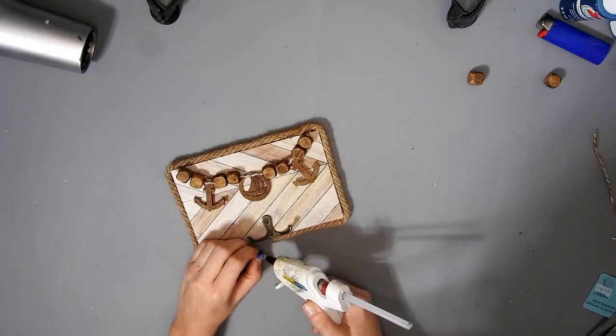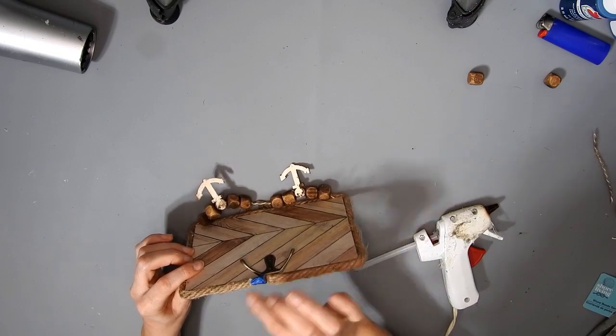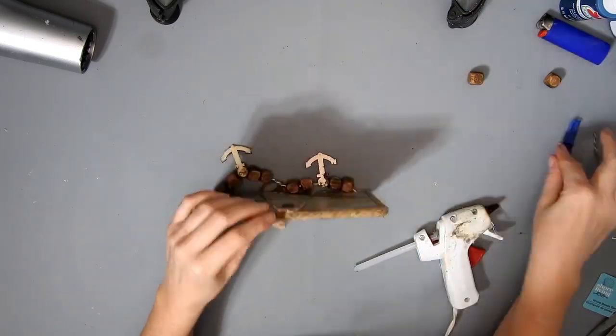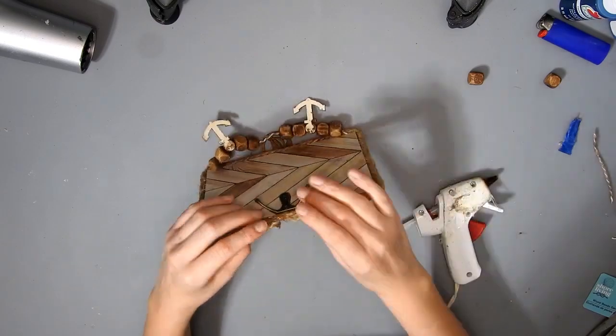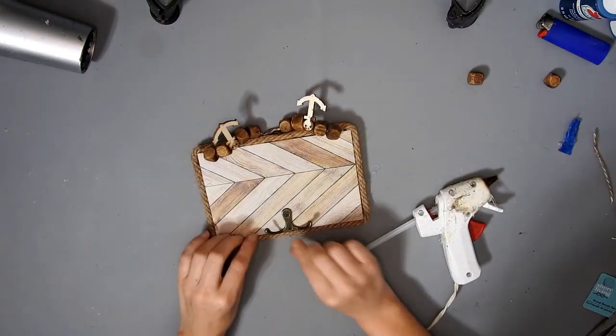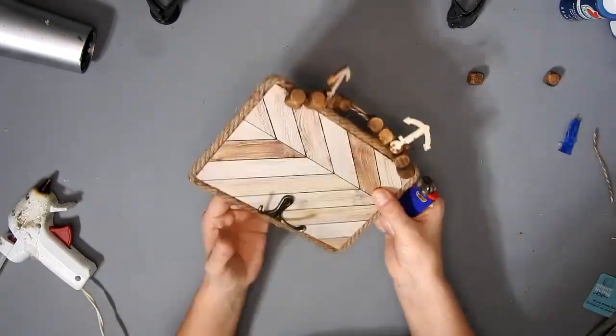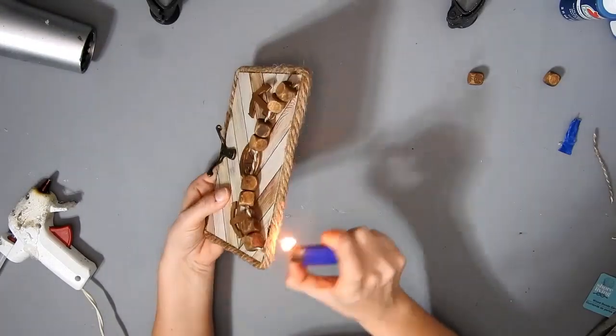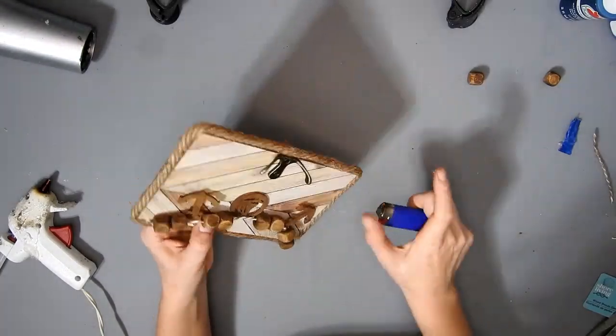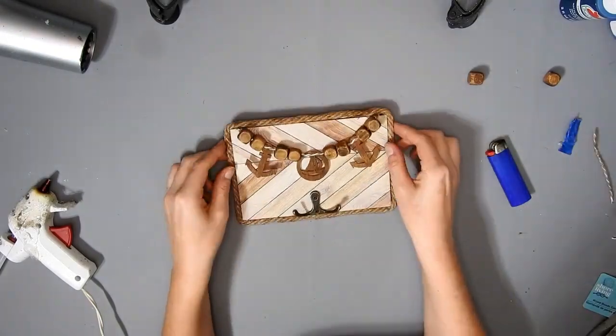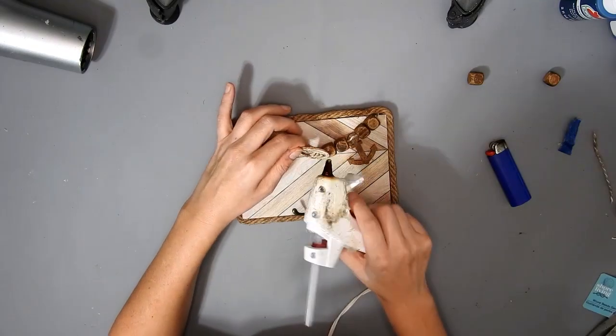When I get to the end I just put some painters tape where I'm going to cut it. Then I put some hot glue on the end. Once it's dry I take the painters tape off and then just hot glue it in place. Then I took the lighter to get rid of all the wee hairs. Then I hot glued the anchors and the boat in place.